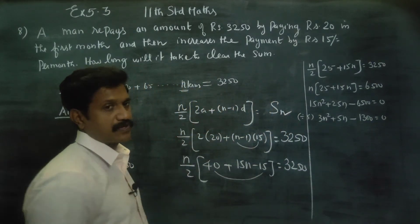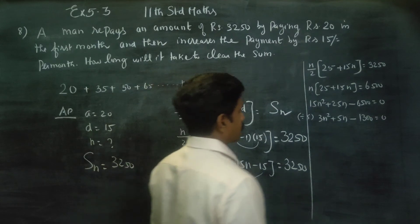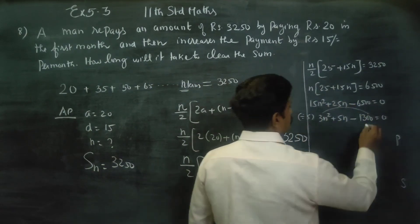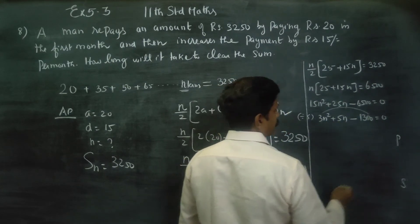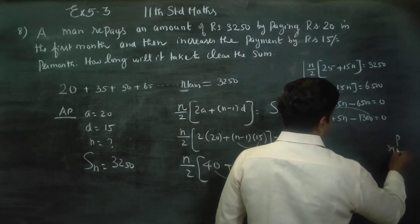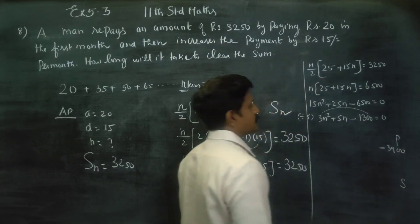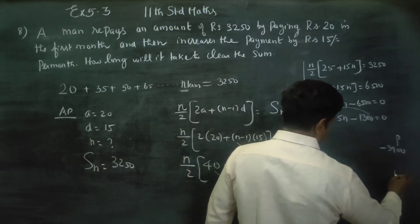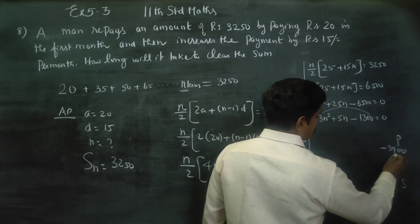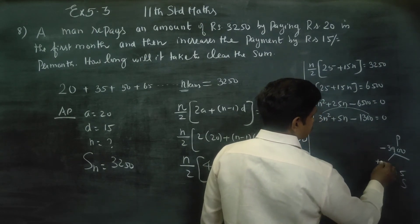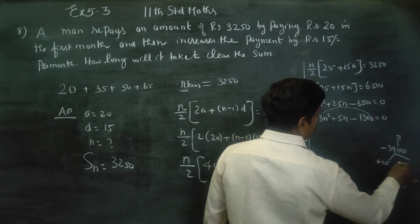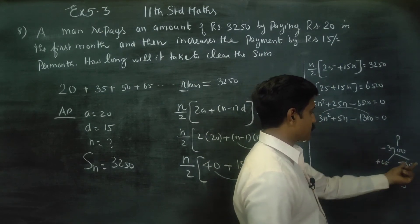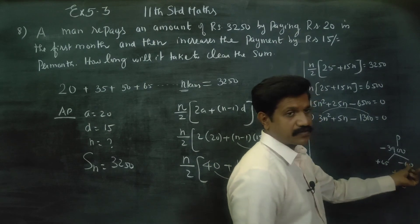The product is 3900. For factorization, you get plus 65 and minus 60. Plus times minus gives 65 and minus 60, with sum 5. This is your pair.